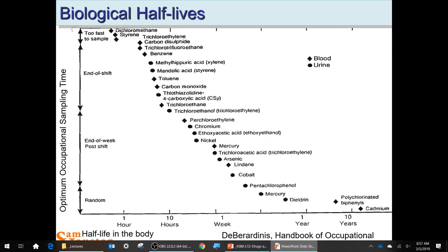These are the biological half-lives. We have data on these. Mercury is detectable in the blood with a half-life of about one week — it takes about a week for the mercury concentration in blood to drop to half of what it was, but it does go away.